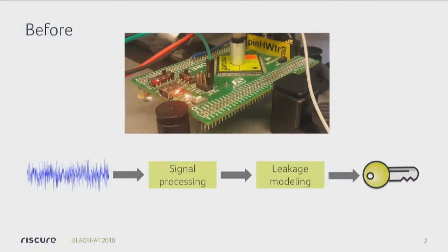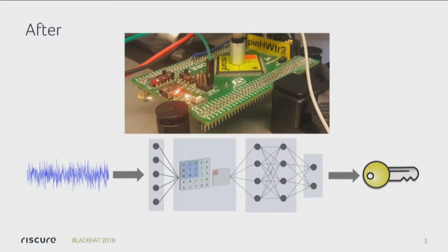This is an obvious bottleneck in scaling up these kinds of tests. So what we've been researching is what happens if we replace those two yellow boxes — the signal processing and leakage modeling — with a neural network, specifically a deep neural network. That's what I'm going to be talking about.